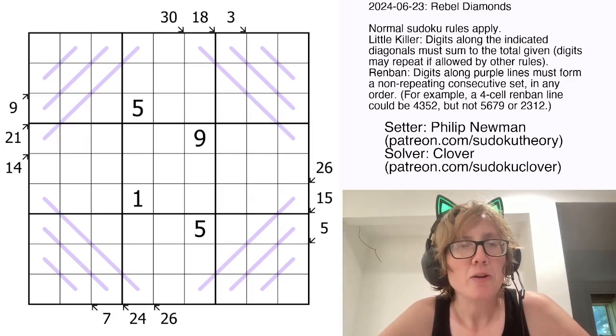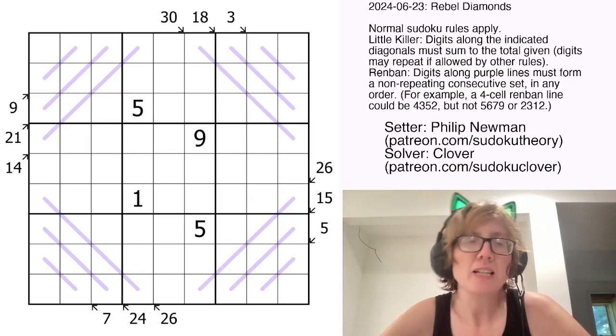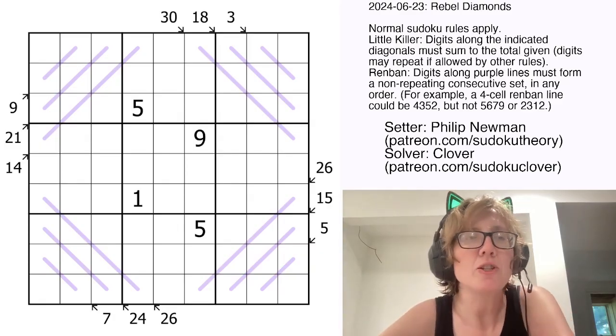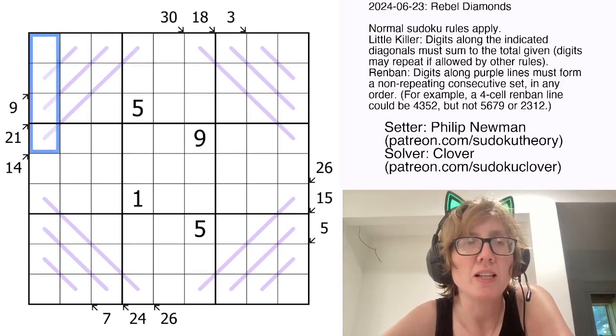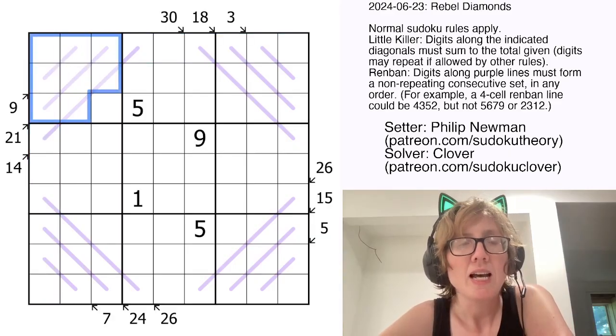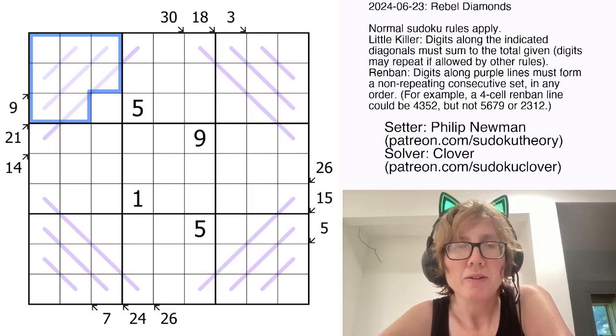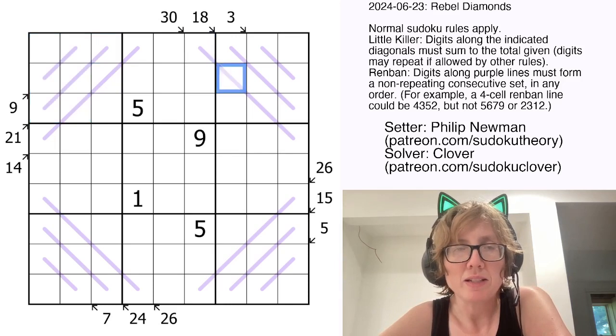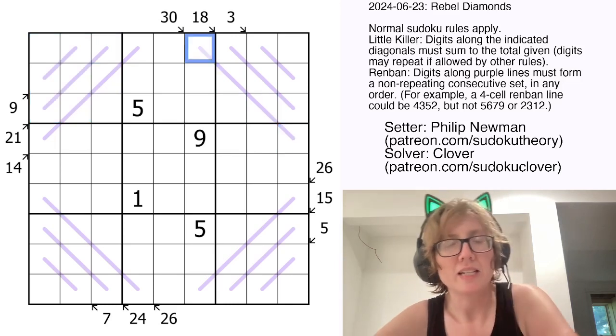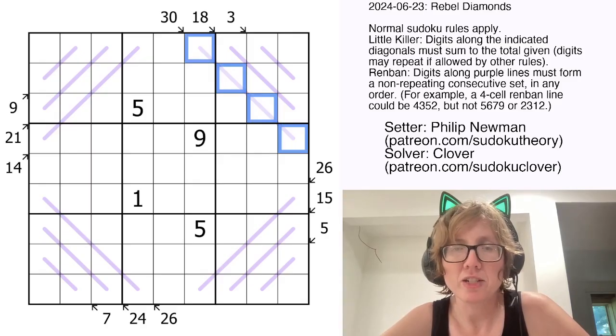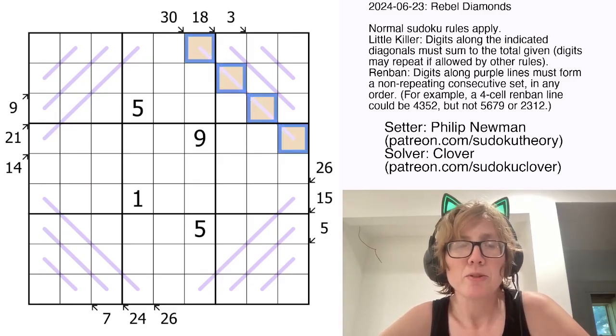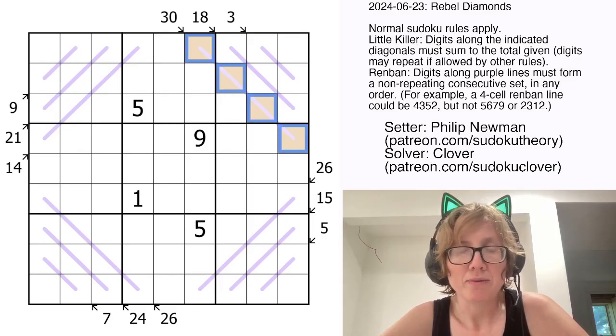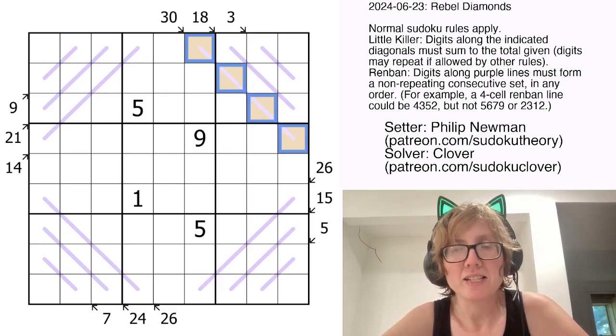So this is a Renban Little Killer Sudoku. We have standard Sudoku rules, so we're placing the digits 1 through 9 once each in each row, each column, and each outlined 3x3 region. Then there are also some arrows outside of the grid indicating diagonals, and those arrows tell you that the sum of the digits along the diagonal equals whatever value is next to the arrow. For instance, the sum of those four digits is 30.